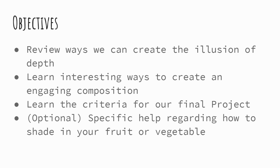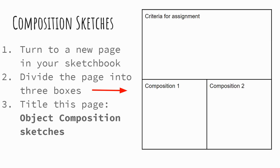So before we get going, you want to turn to a new sheet of paper in your sketchbook, if you have it out. And you want to divide it into three sections, like so. In the top, I would like you to write the criteria for this assignment. I'm going to go over it at the end of this project. I'm also going to write it into the chat on the side of our Google Hangout.